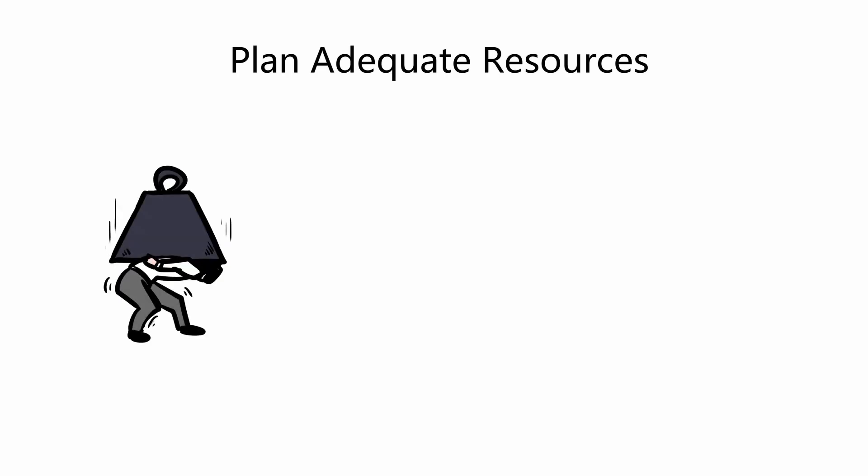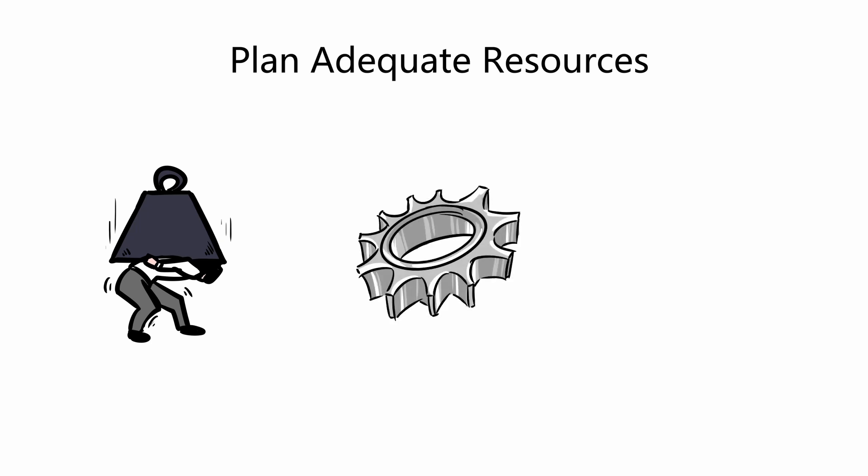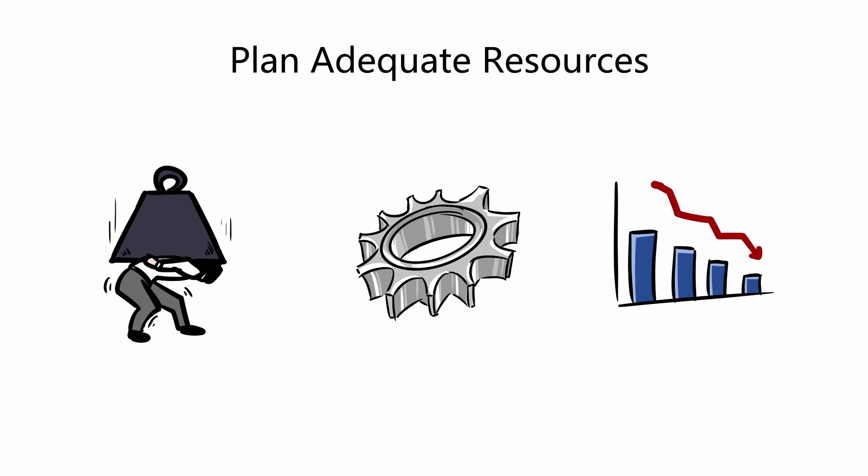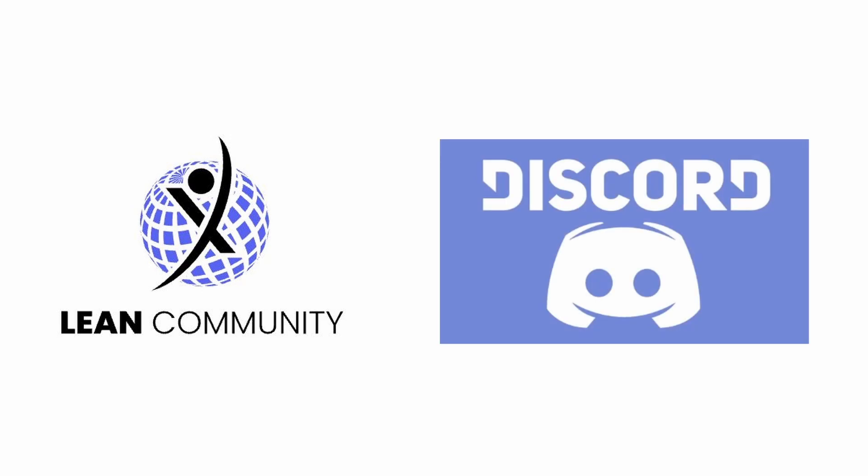Tip 3: Plan adequate resources for maintenance. If you don't plan adequate resources in terms of people and spare parts, the first results you achieve on the first machine will inevitably be lost when you move to other machines. There are many other practical tips for implementing TPM — join the Lean Community Discord server to find experts available to answer all your questions. Find the link in the description.